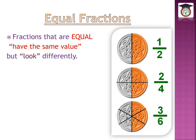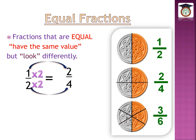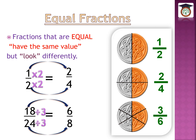Now, equal fractions. I can say 1 over 2 is equal to 2 over 4, which equals 3 over 6 — all these fractions are equal. If I take 1 over 2 and multiply both top and bottom by 2, I get 2 over 4. That is an equal fraction. Now if I have 18 over 24 and want to simplify — simplify means divide. I can divide both top and bottom by 3: 18 divided by 3 equals 6, and 24 divided by 3 equals 8. So the answer is 6 over 8, and we can simplify 6 over 8 again.